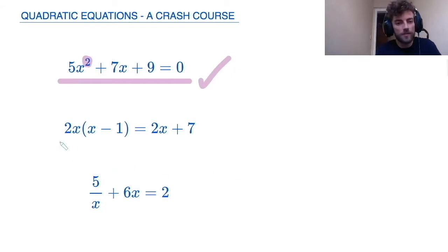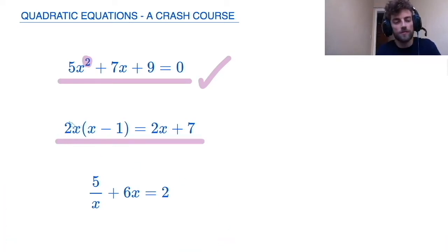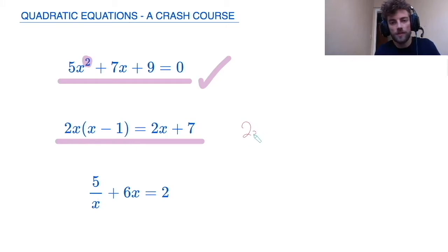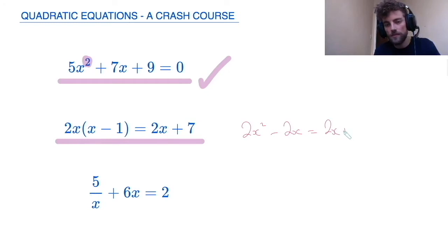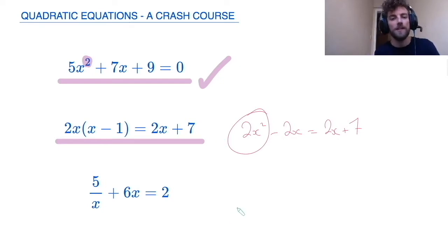Now you might look at this one here and be a little less certain. It doesn't seem quite so obvious straight away that it's a quadratic equation. But if I expand out these brackets here, I get 2x squared minus 2x equals 2x plus 7. It immediately becomes apparent that this is a quadratic equation because the highest power of x is x squared.